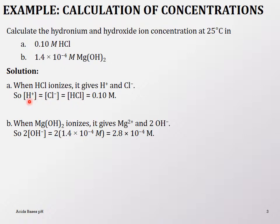So the hydronium ion concentration for HCl is 0.1 molar. Note that H⁺ and hydronium ion are the same thing. For magnesium hydroxide, when it ionizes it gives one magnesium ion but two hydroxide ions, so the hydroxide concentration is twice the original solution concentration. That gives us 2 × 1.4×10⁻⁴ = 2.8×10⁻⁴ molar.